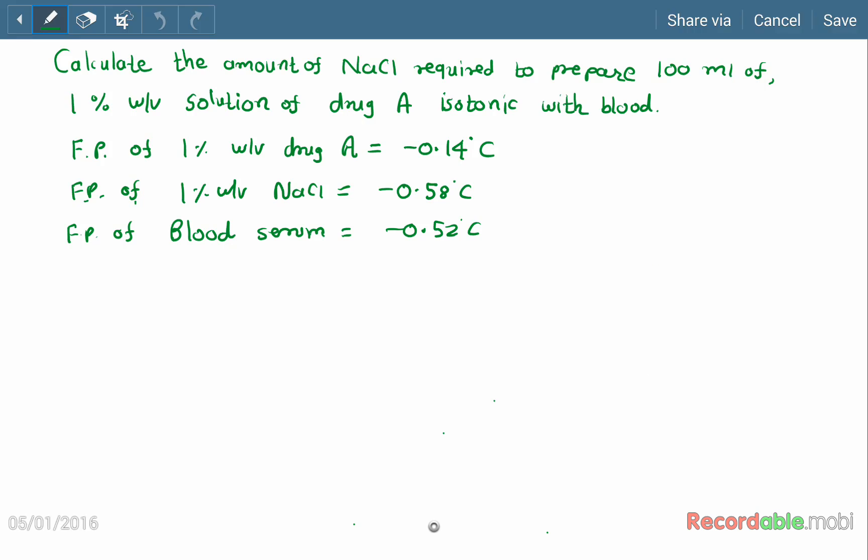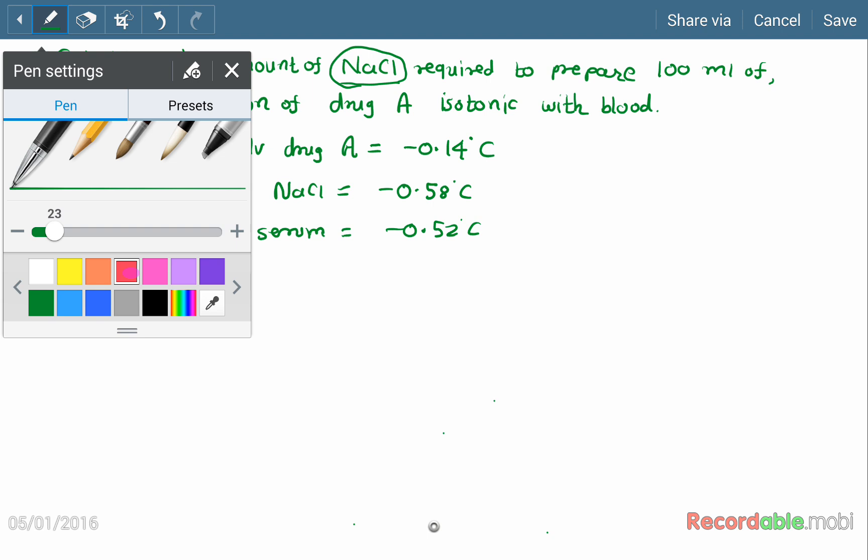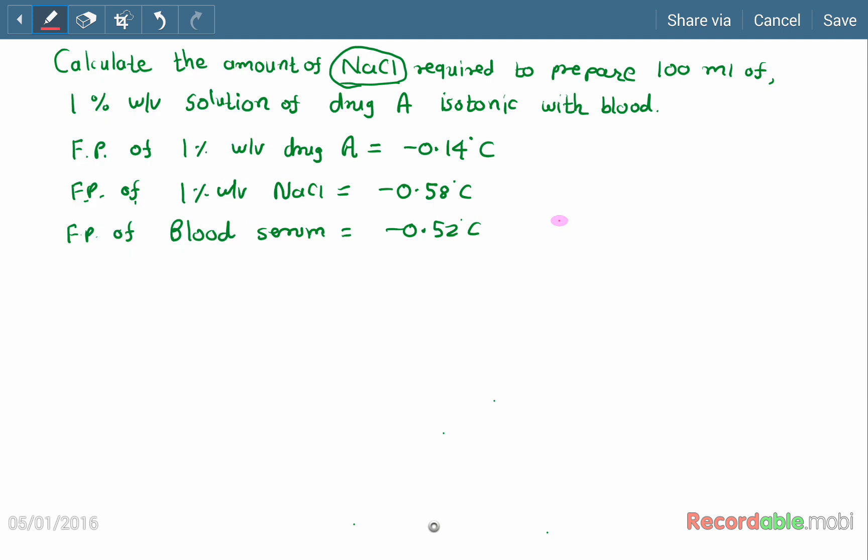Let us do the example: calculate the amount of sodium chloride required to prepare 100 ml of 1% solution of drug A isotonic with blood. Here we are going to prepare an injectable formulation and we have to adjust the isotonicity of this injectable product by using sodium chloride as an adjusting substance.